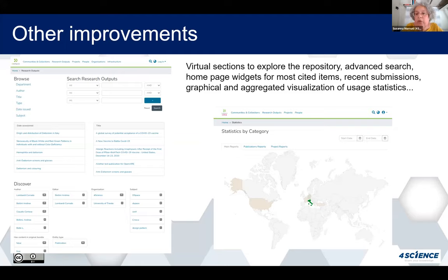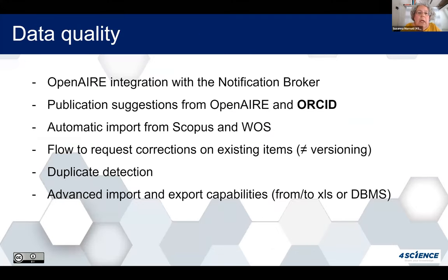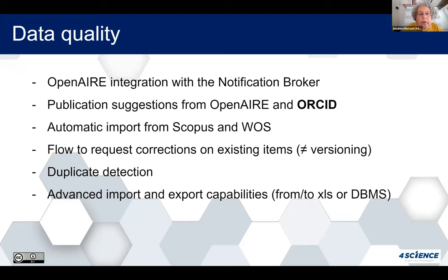The public face also features graphical representation of search results using pie charts or bar charts, configurable to represent the latest years or a full set of research. Virtual sections are implemented to explore the repository — for instance home page widgets for the most cited items or recent submissions, and graphical and aggregated visualization of user statistics such as a map to visualize the provenance of hits and downloads. Regarding data quality, OpenAIRE is integrated with a notification broker both for metadata enrichment and publication suggestions.